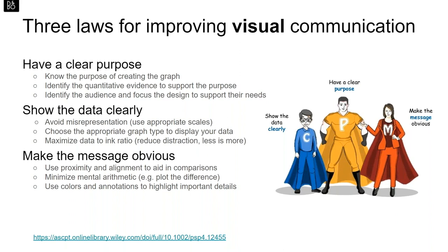You can think of these three laws as superheroes. 'Have a clear purpose' is really about why we need this graph — identifying the quantitative evidence and the audience, focusing the design to support their needs. 'Show the data clearly' is about avoiding misrepresentation, choosing the appropriate graph type, and maximizing the data-to-ink ratio — a complex way of saying keep it simple. Finally, 'make the message obvious' means using proximity and alignment to aid comparisons, minimizing mental arithmetic, and using colours and annotations to highlight important details.